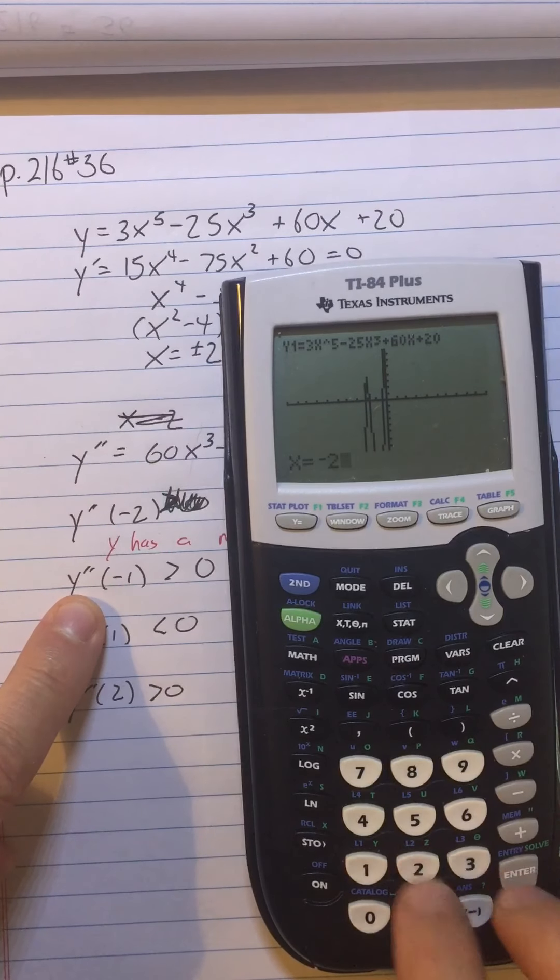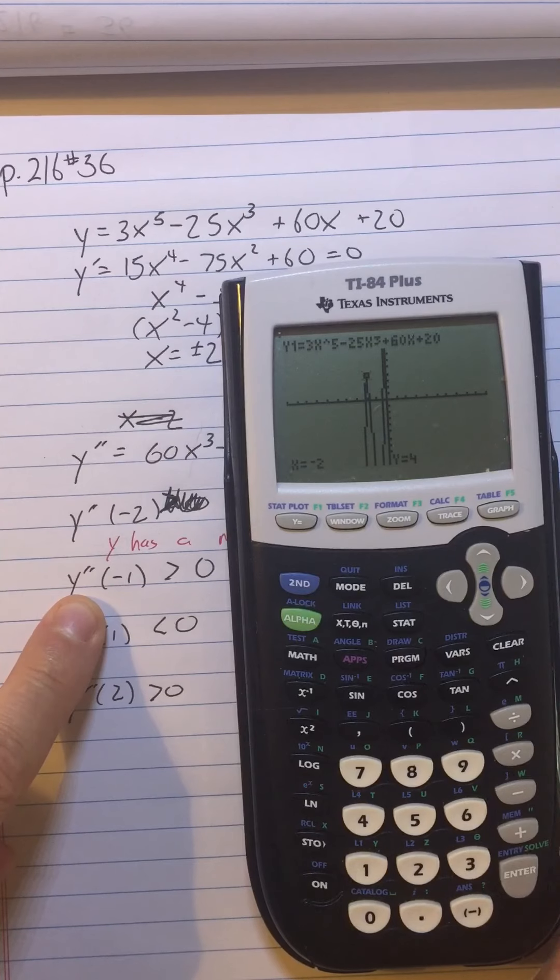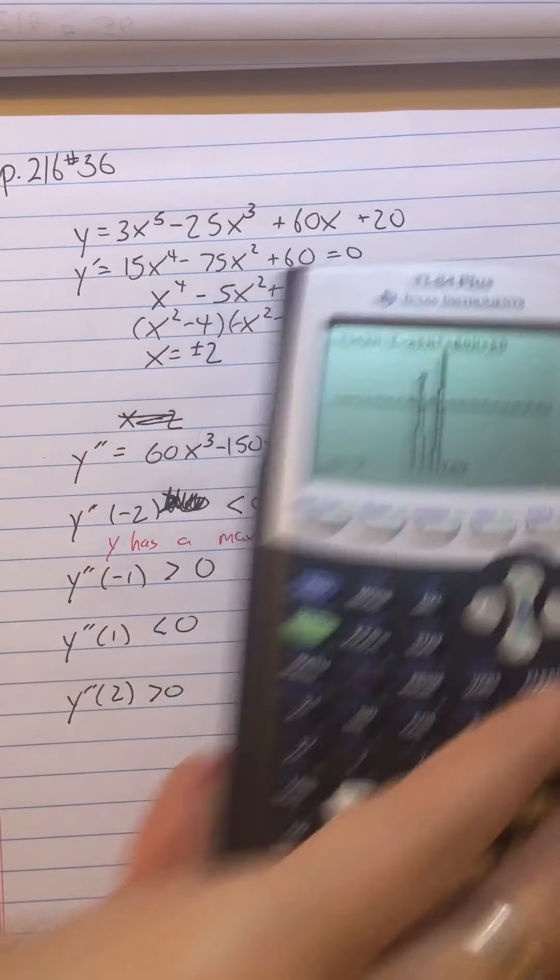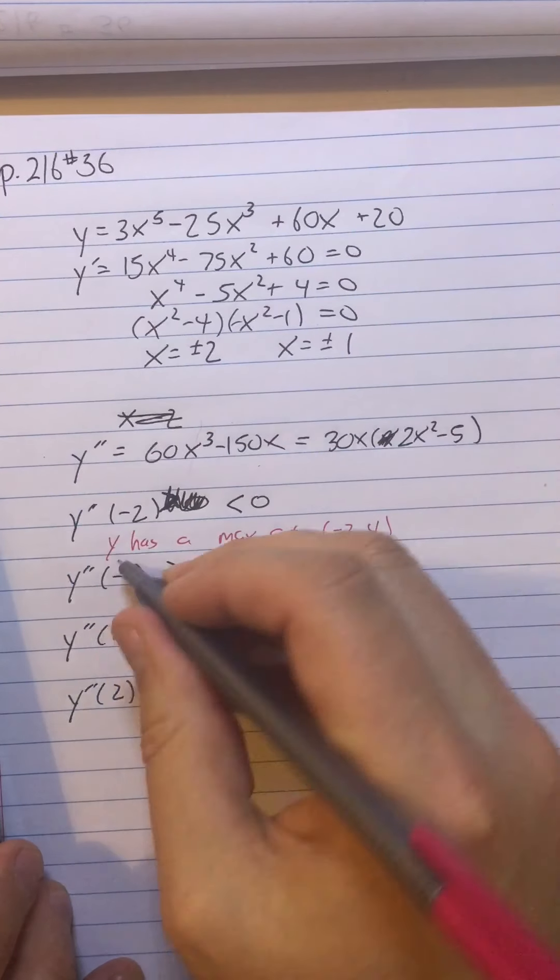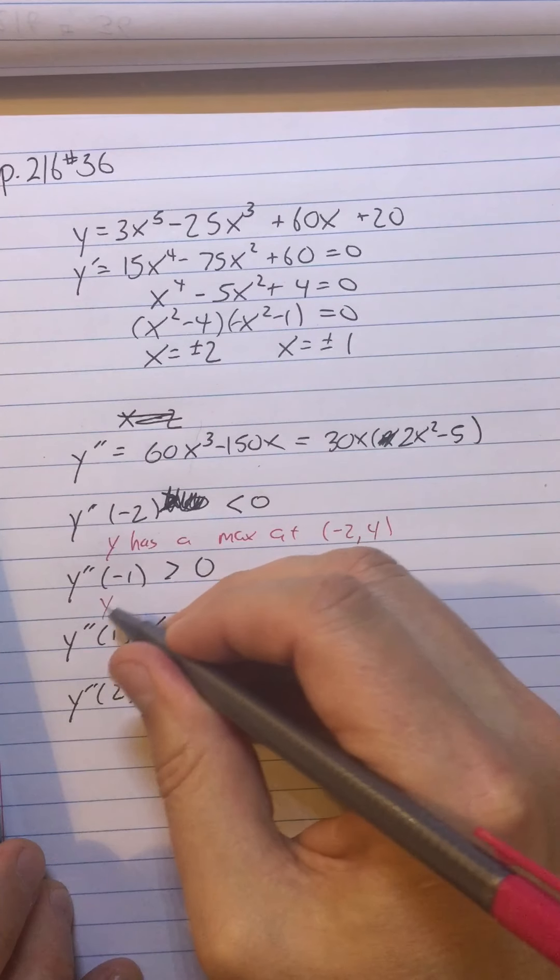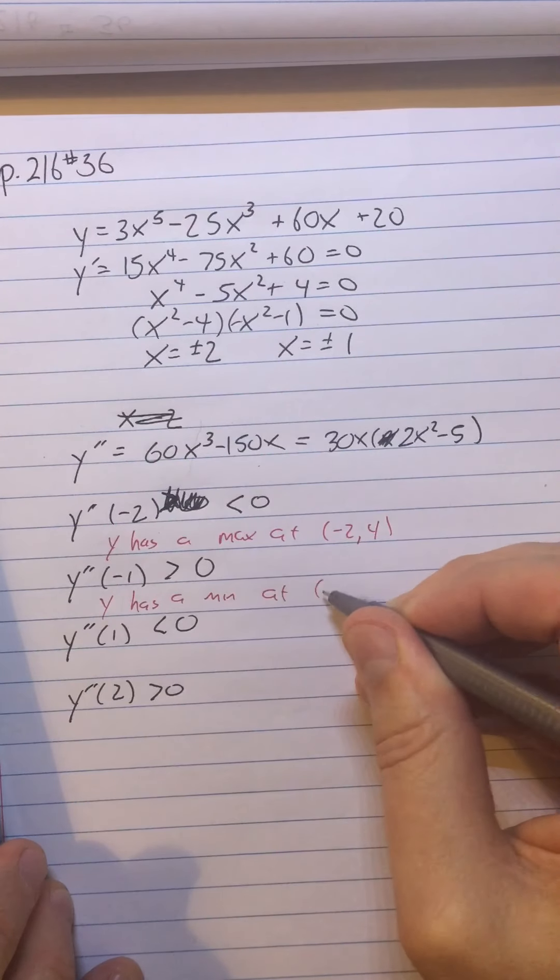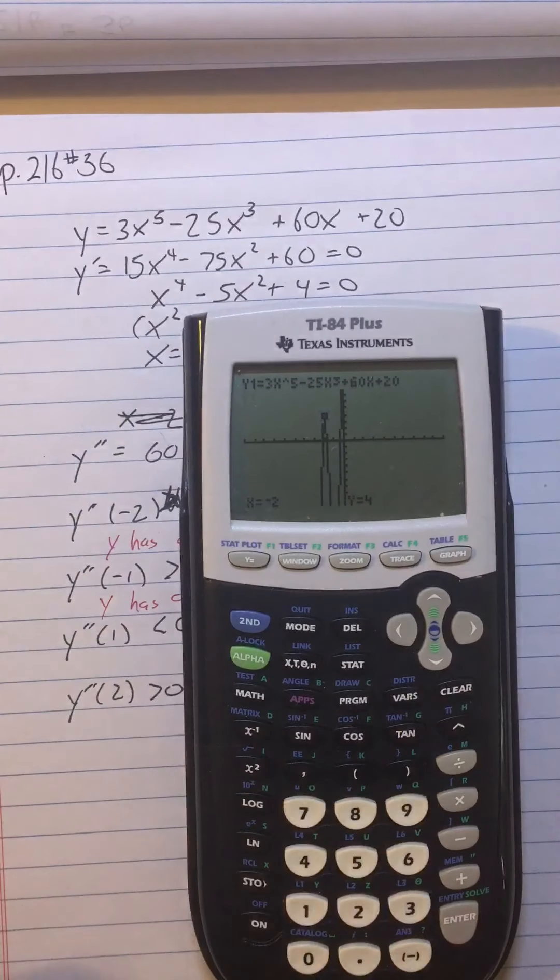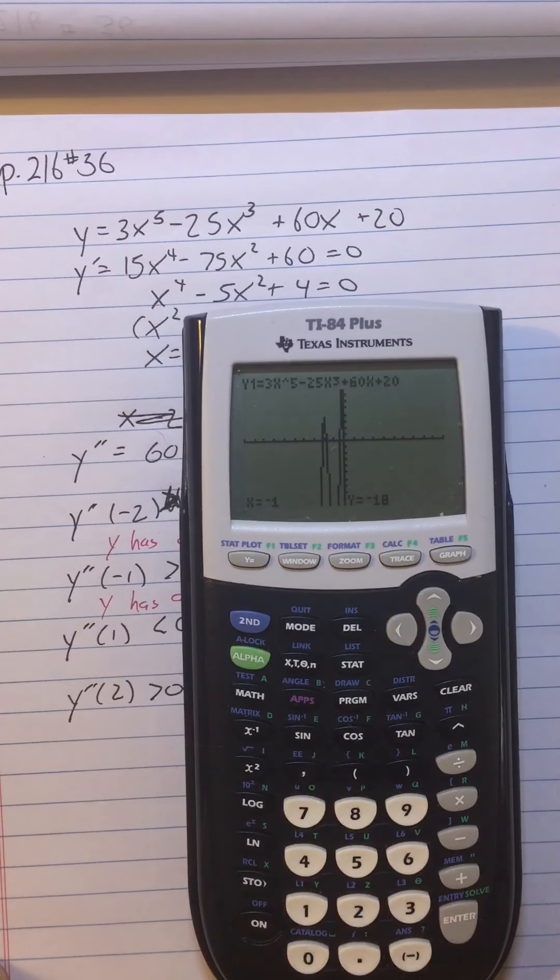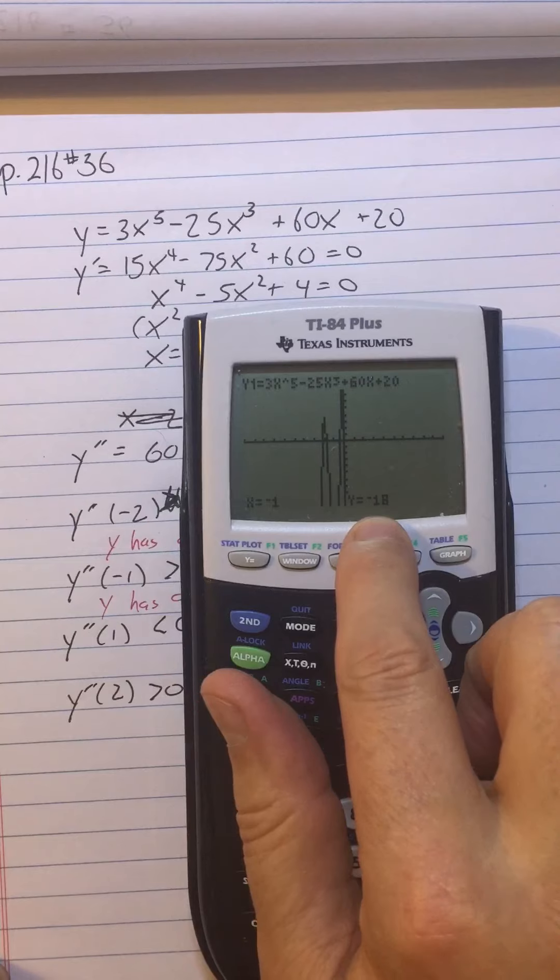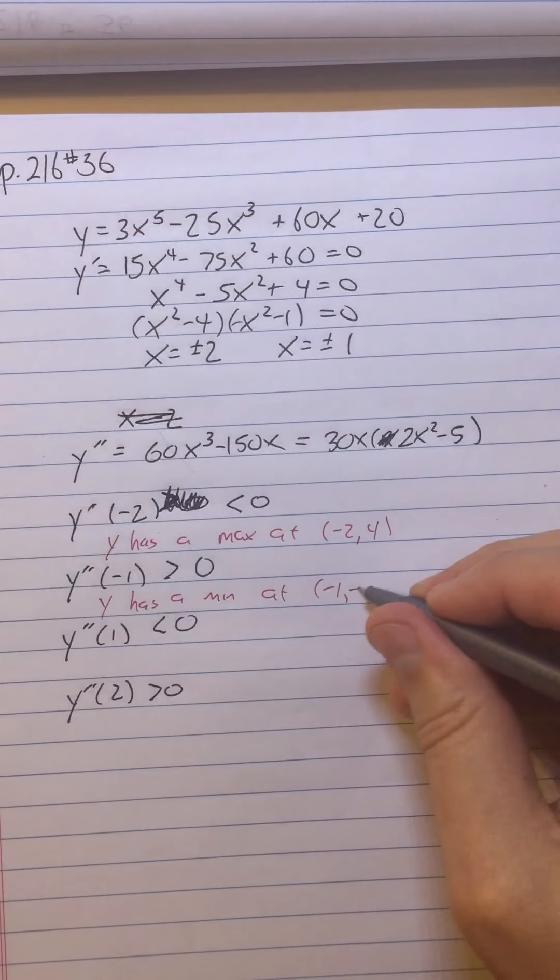So if I hit -2, there we go. So -2, y is 4. So (-2, 4). This one, y'' is greater than zero. So y has a min at -1. So I can just hit -1. Enter. When I'm in trace mode, it tells me the y-coordinate, -18.